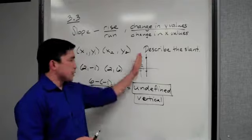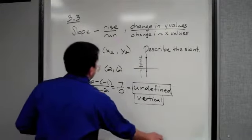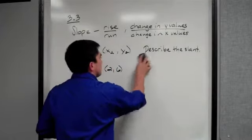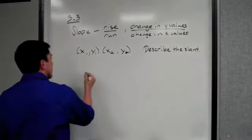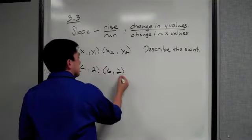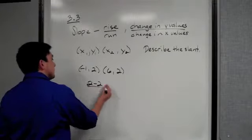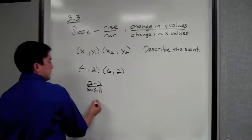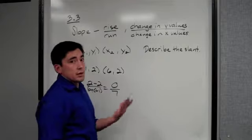What happens when we actually switch that around? Let's see what we get here. Instead of saying (2, -1), if we get (-1, 2) and (6, 2), if we set up this doing slope, we get 2 minus 2, y2 minus y1, over x2 minus x1. That becomes 0 over 7.